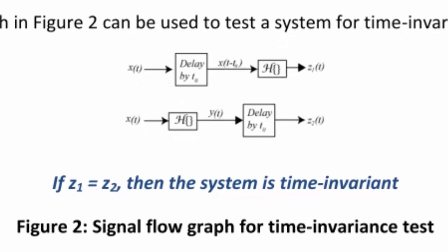We use the signal flow graph in Figure 2 to test a system for time-invariance. First, we take the input x(t) and delay it by t1, then send it through the function to get z1(t). Then we take x(t), send it through the function to produce y(t), delay that output by t1, and make that z2(t). If z1(t) equals z2(t), then we say the system is time-invariant.